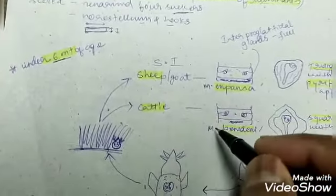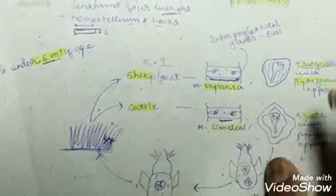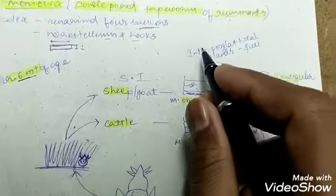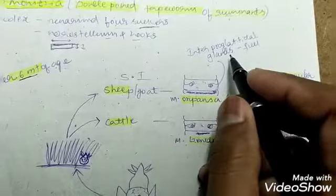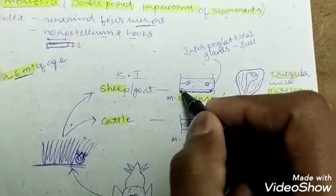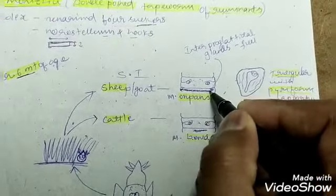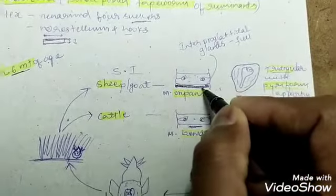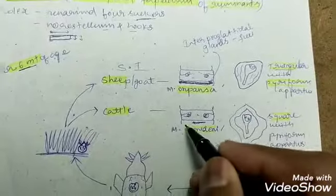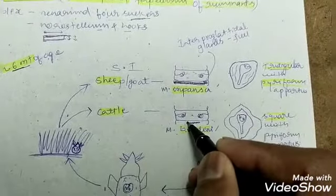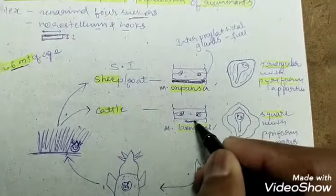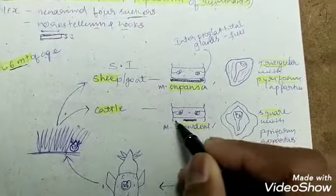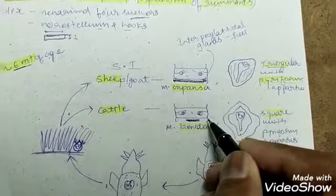In case of cattle, that is Moniezia benedeni. The characteristic feature of Moniezia expansa is presence of interproglotidal glands throughout the length of the proglotid. In case of Moniezia benedeni, the interproglotidal glands are only restricted to the middle of the proglotids. It is not extended throughout the length.